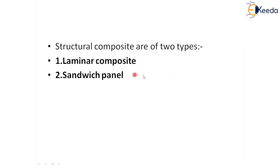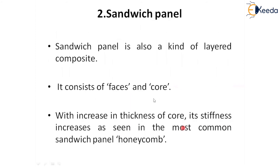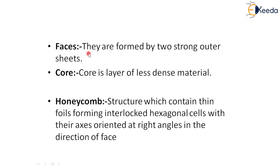There are two types: laminar composite and sandwich panel. The laminar composite material consists of two-dimensional panels or sheets which possess a proper direction to achieve high strength — all the directions are aligned. If both sheets are of the same material and another material is placed in between, that is a sandwich material. In general it consists of faces and a core — as the thickness of the core increases, the stiffness also increases, especially in the honeycomb sandwich structure.